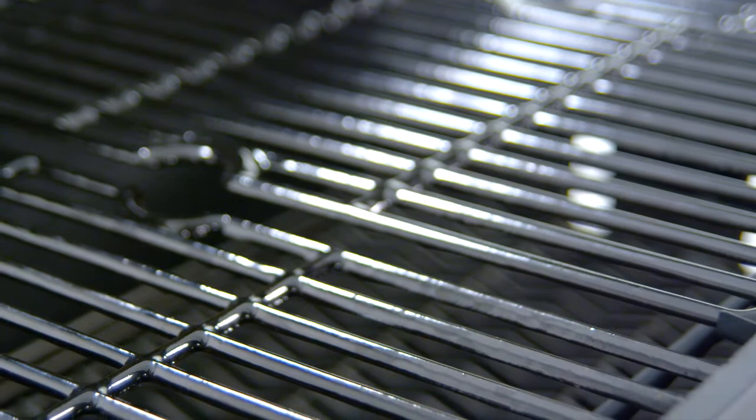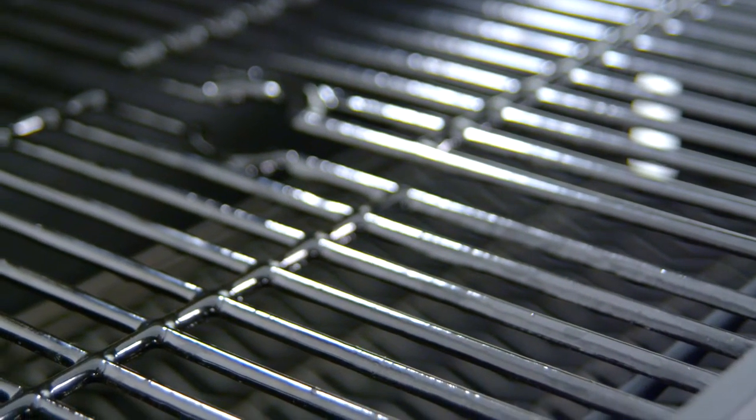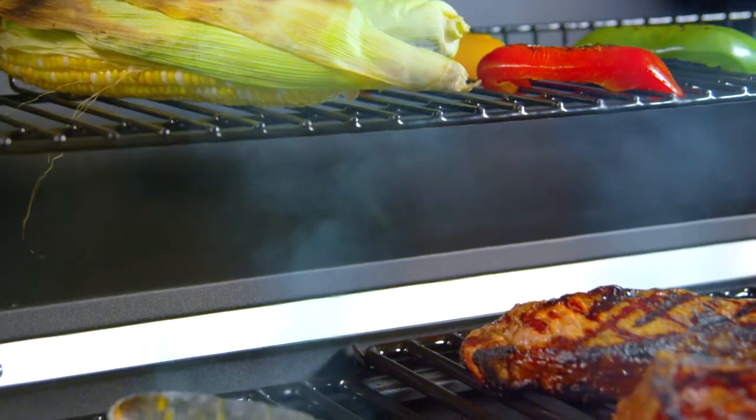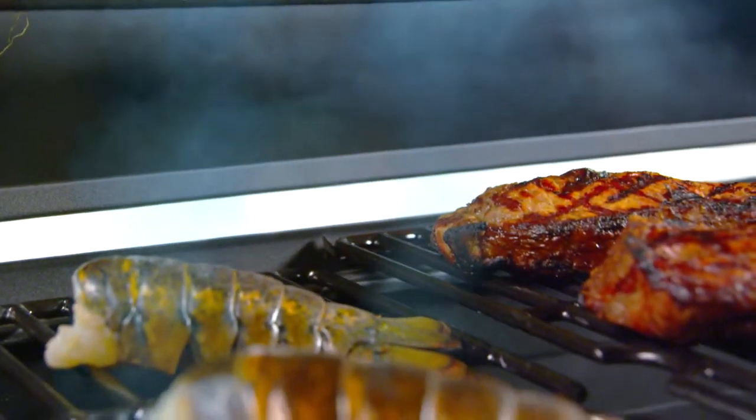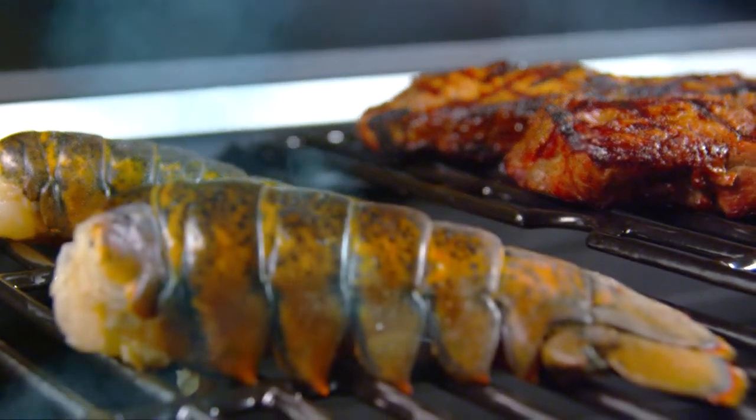The cooking grates are made from cast iron and coated with a high-gloss porcelain enameled finish. Cast iron is ideal for retaining heat, while the enameled surface is ideal for transferring heat directly to the food for searing and locking in natural juices.